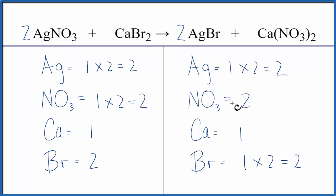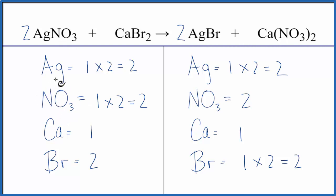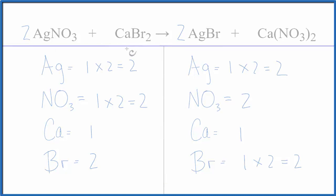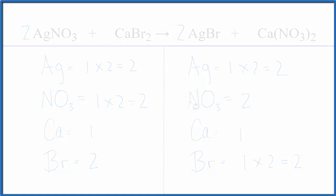We're done. This equation is balanced. When you have a polyatomic ion like the nitrate here on both sides, treating it as one item makes the balancing a lot easier. This is Dr. B with the balanced equation for AgNO3 plus CaBr2. Thanks for watching.